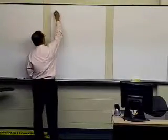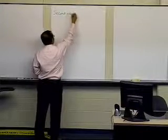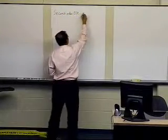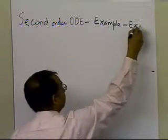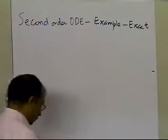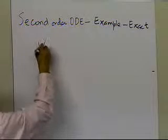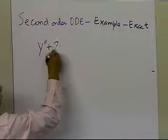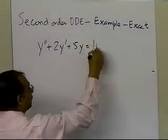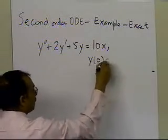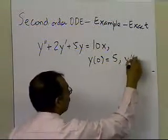In this segment, we're going to take a second-order ordinary differential equation. We're going to take an example and try to find out what the exact solution is. So let's look at a differential equation example where y double prime plus 2y prime plus 5y equals 10x. We're also given the initial conditions y(0) equal to 5, and y prime of 0 equal to 2.